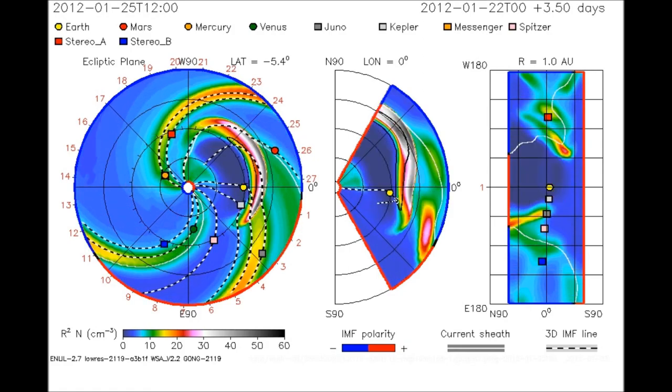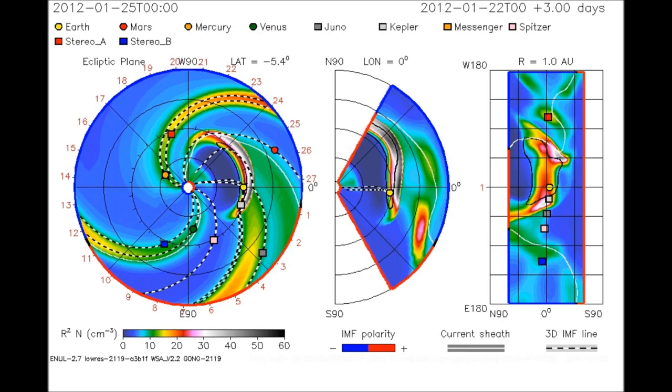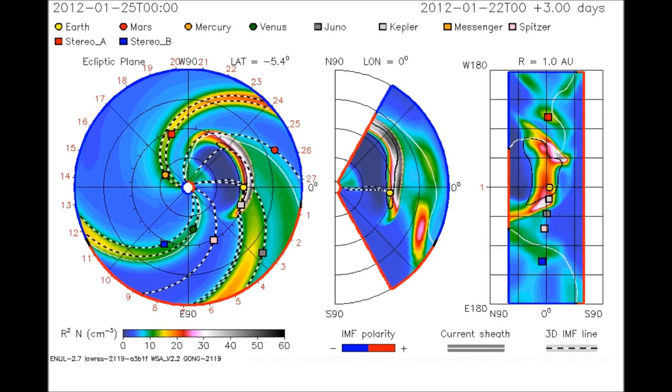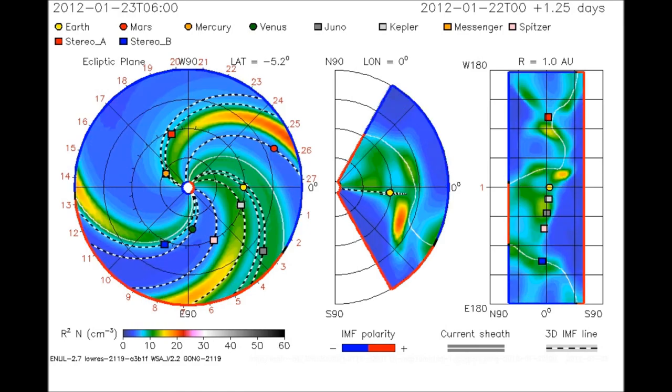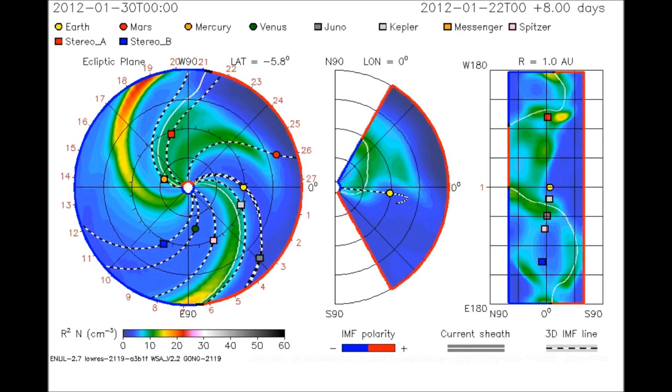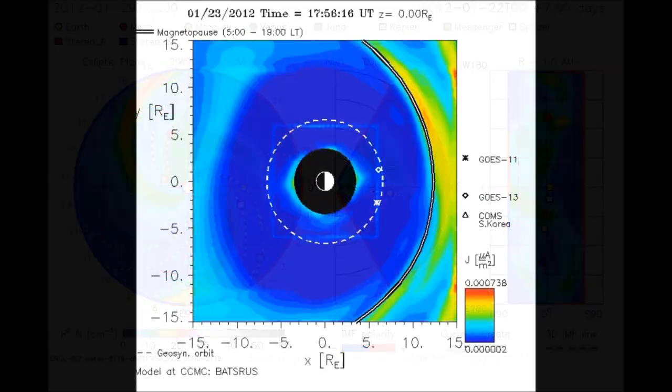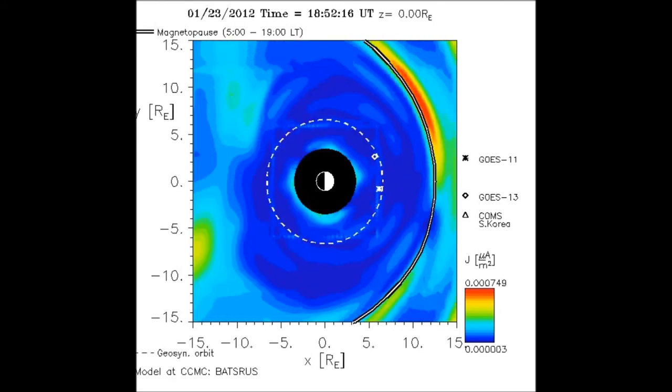Update on the solar CME which arrived on January 24th, 2012. The near-X-class solar flare arrived on January 24th, 2012, at around 10 AM EST.